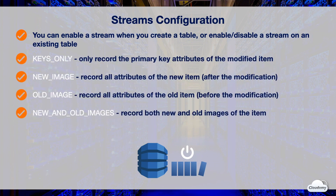You can configure a stream with one of the following options: Keys Only, New Image, Old Image, and New and Old Images. Keys Only allows the stream to only record the primary key of the modified item. The New Image option records all attributes after the modification. The Old Image option records all attributes before the modification.